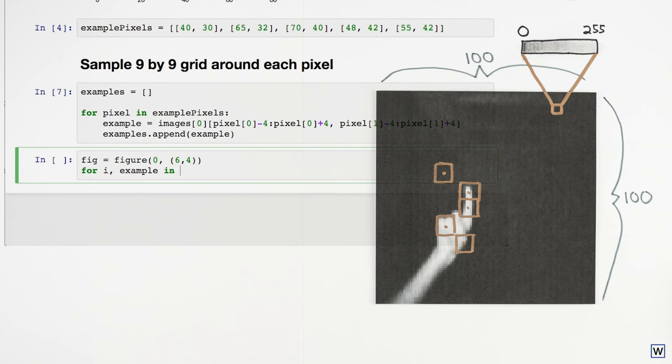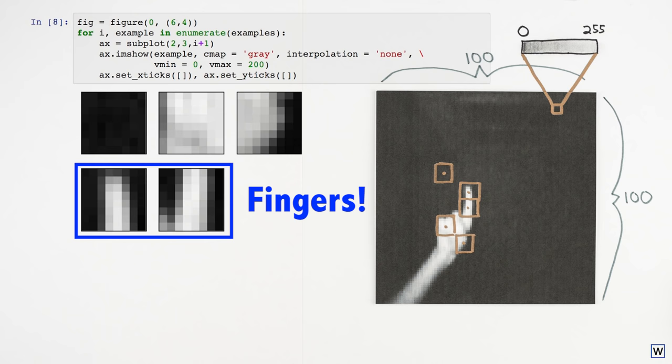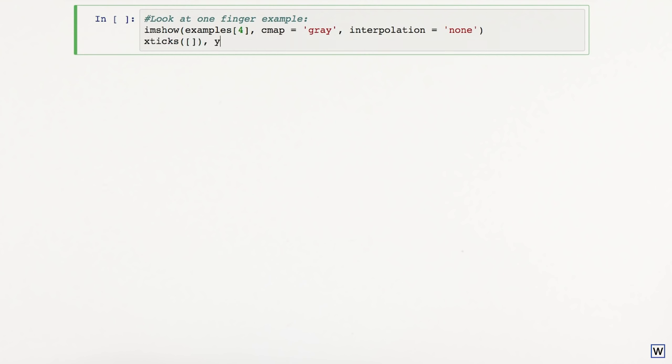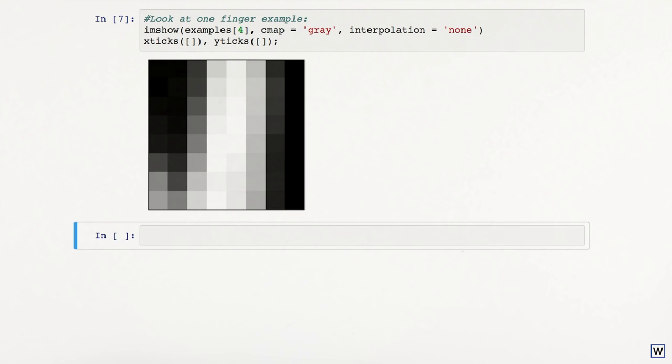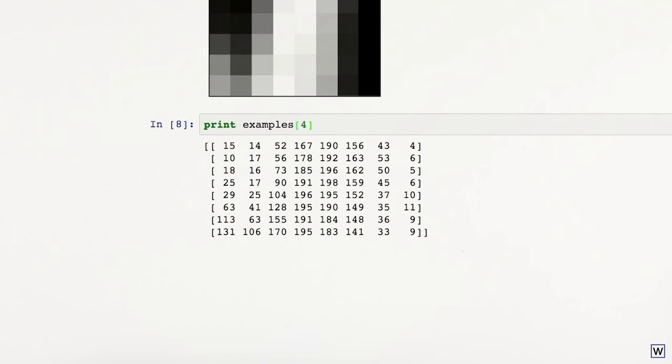We now have a much more clearly defined problem. Given a 9x9 example, we need to decide if these pixels show a finger or something else. This is easy for us to do visually, but we have to remember that our computer is completely unaware of what an image is. We see fingers thanks to our visual cortex, but our computer just sees numbers. Our algorithm must decide if it sees a finger or not based completely on these 81 numbers.